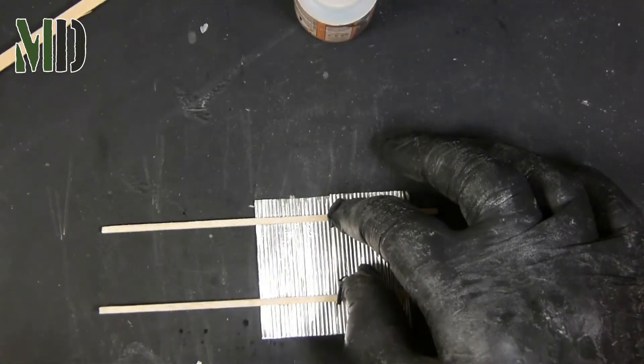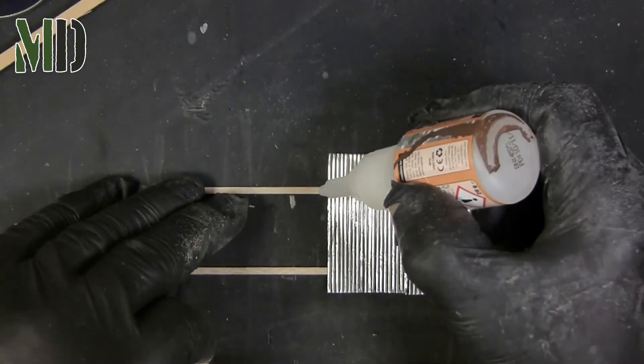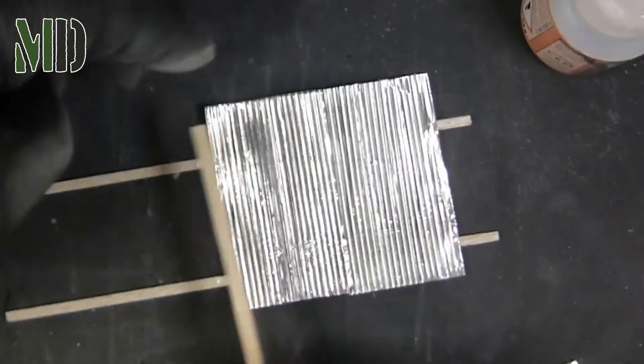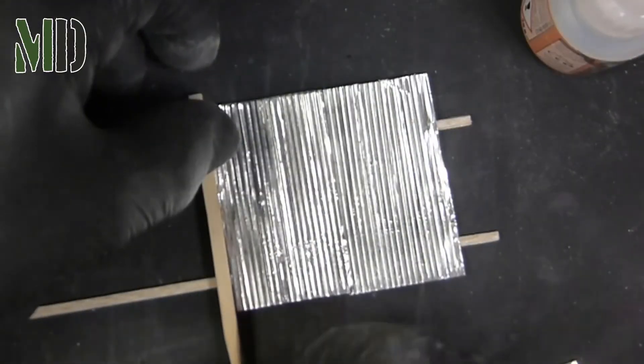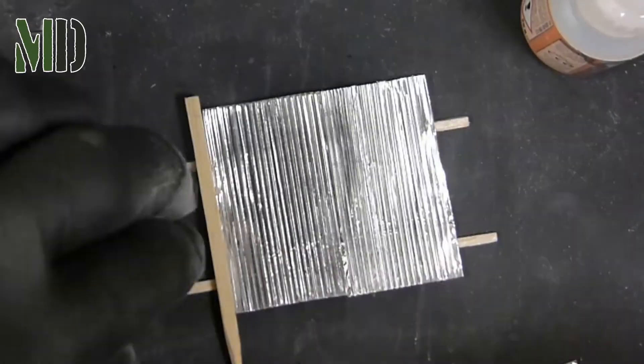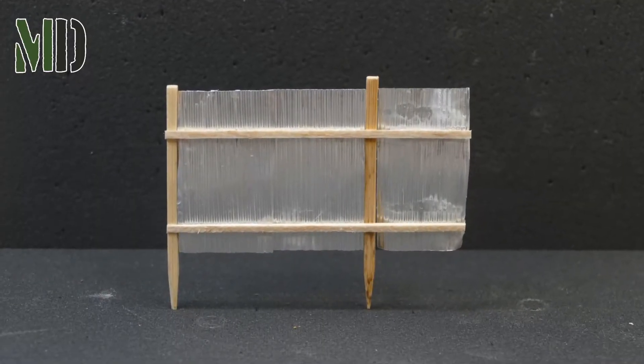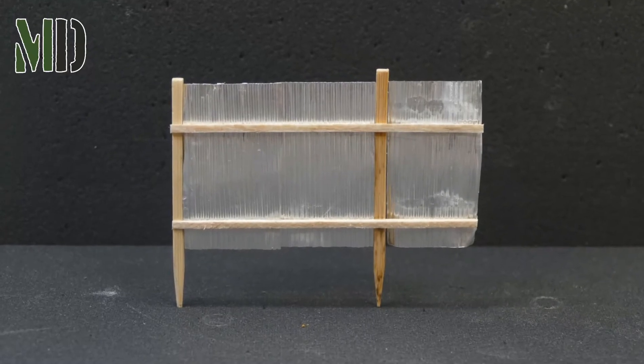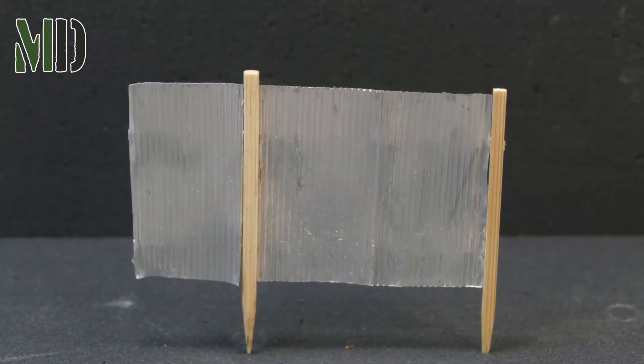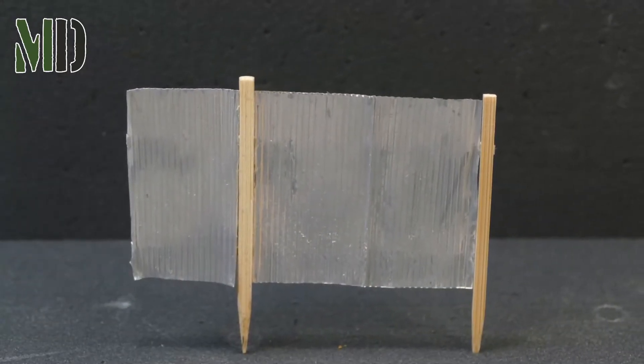I also use a small amount of activator because the glue will set quicker by doing this and just keeps it in place quicker. And then using some of the burger skewers, I cut these to length and stick these on for the fence posts. And that's the corrugated steel fence finished.